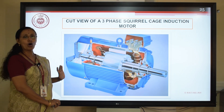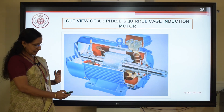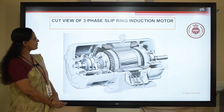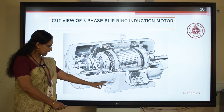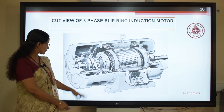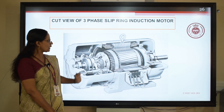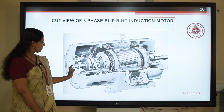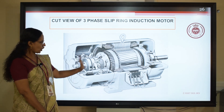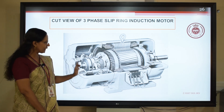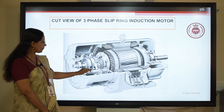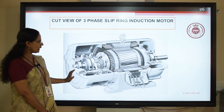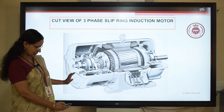In the cut view of the three-phase slip ring induction motor, you can see the foot, terminal box, stator core with windings, the shaft, the rotor core with three-phase winding terminated to three slip rings, the brush holding mechanism, and ball bearings. That's it. Thank you.